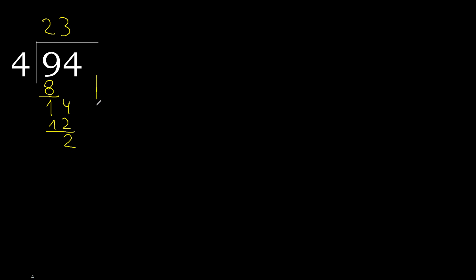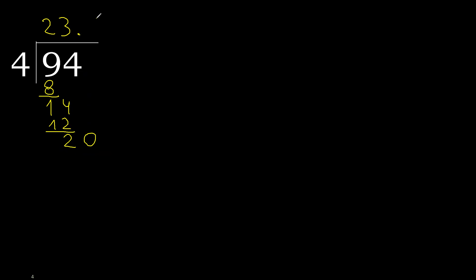Next, there is no more number, therefore complete. Always complete with 0, here with a point: 0 point. 4 multiplied by 5 is 20. 20 minus 20 is 0. Therefore finish.